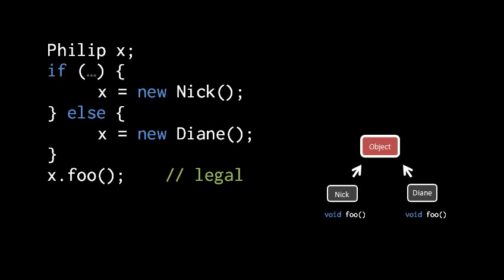Understand though, that because the compiler sees x as of type Philip, then the only thing we can get at via this reference are the methods listed in the interface Philip. If Nick and Diane happen to have some other methods in common, but those methods aren't listed in Philip, then we can't use x to get at them. And as for fields, well, an interface never includes fields, so you never get at fields via a reference of an interface type.